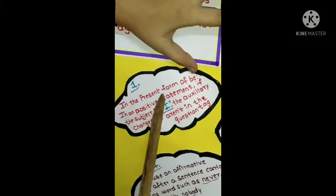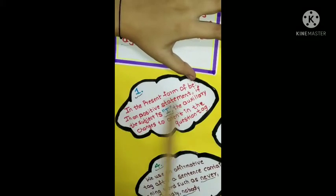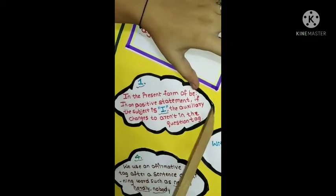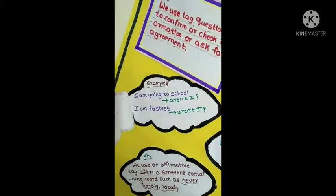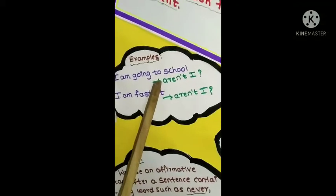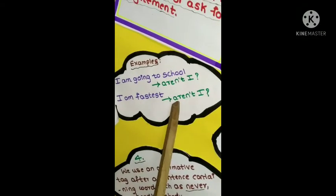First one. In the present form of be in a positive statement, if the subject is I, the auxiliary changes to aren't in the question tag. Here are some examples. I am going to school. It changes into aren't I. I am fastest. It changes into aren't I.